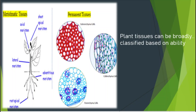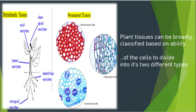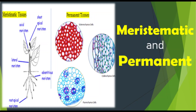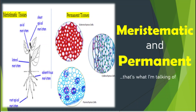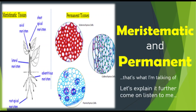Plant tissue cells can be broadly classified based on the ability of the cells to divide, into two different types: meristematic and permanent tissue.